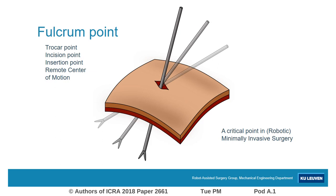If the fulcrum location needs to be known for robot control, it is most straightforward to estimate the location from the kinematic data that is already available. From kinematic data, the instrument axis is known at different points in time. The intersection between these axes then yields the fulcrum position. In literature, a number of methods have been proposed to compute this intersection, but so far these lacked robustness and responsiveness.